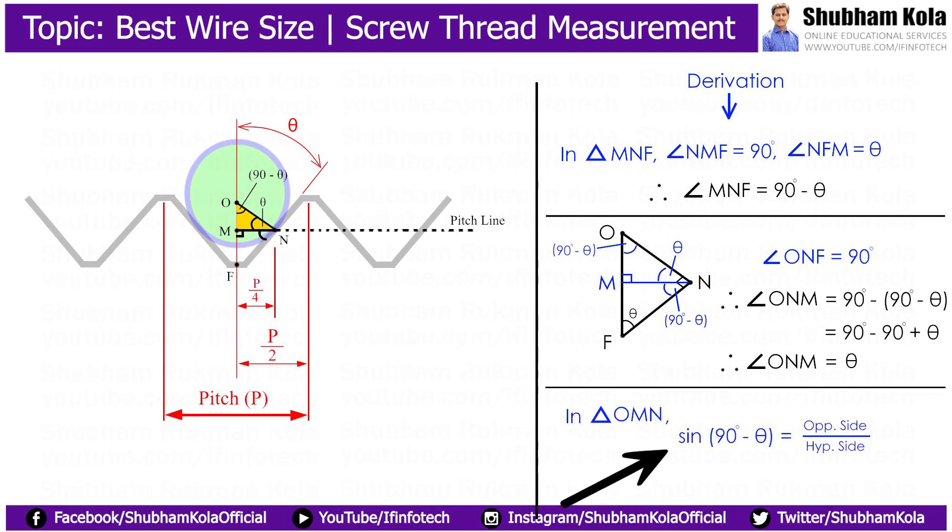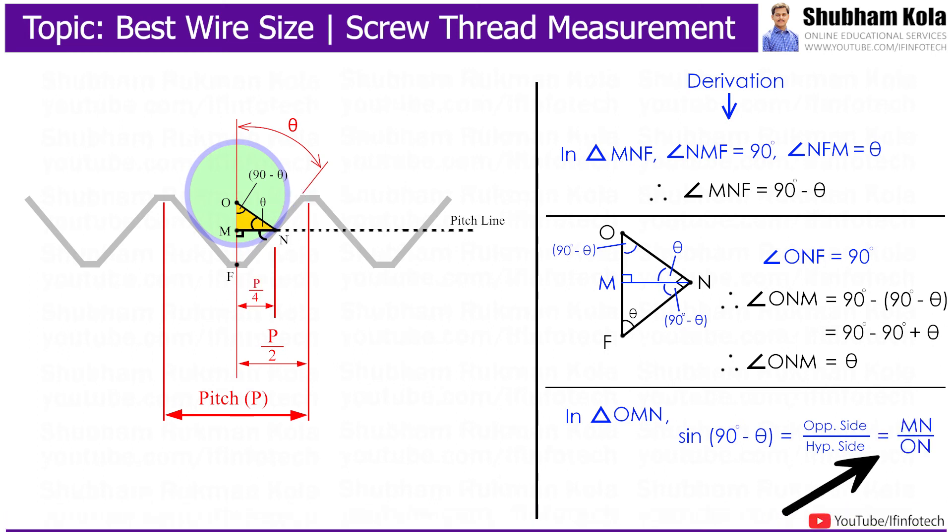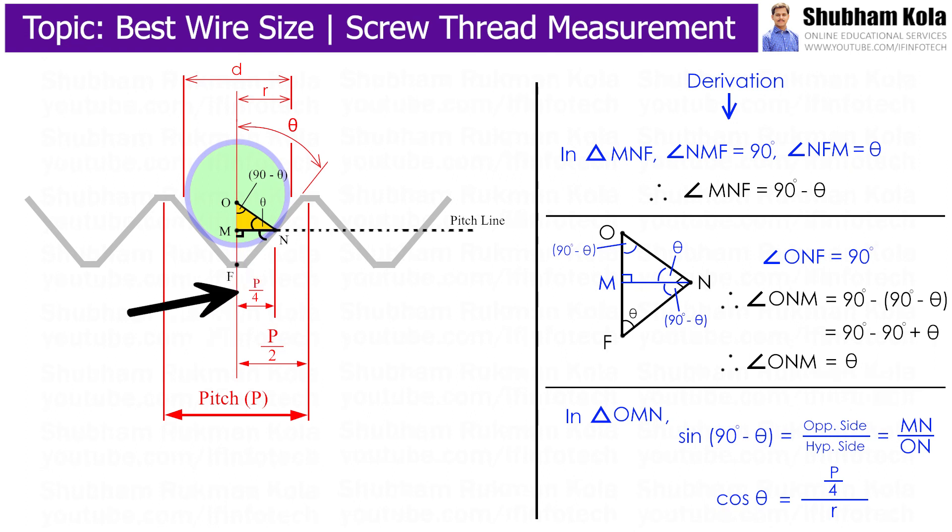In triangle OMN, sin of 90 minus theta is opposite side upon hypotenuse side, that is MN by ON. And sin of 90 minus theta is cos theta, and distance ON is radius of wire, that is small r, and distance MN is pitch by 4.